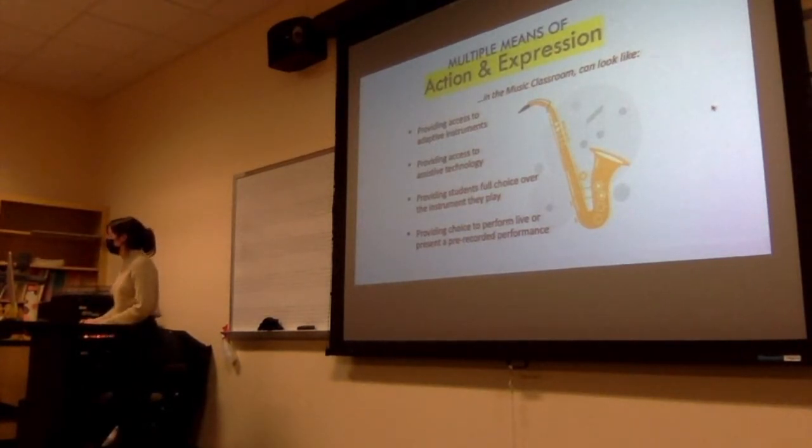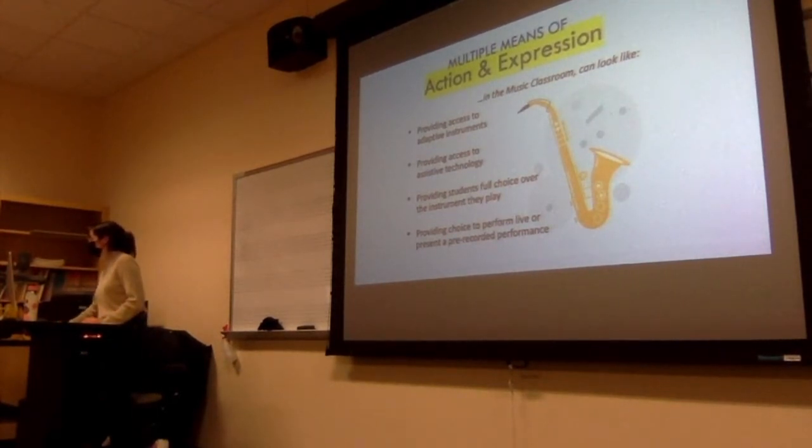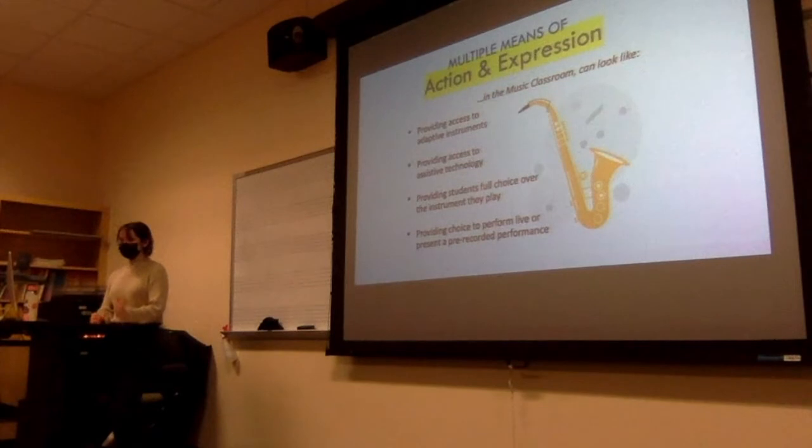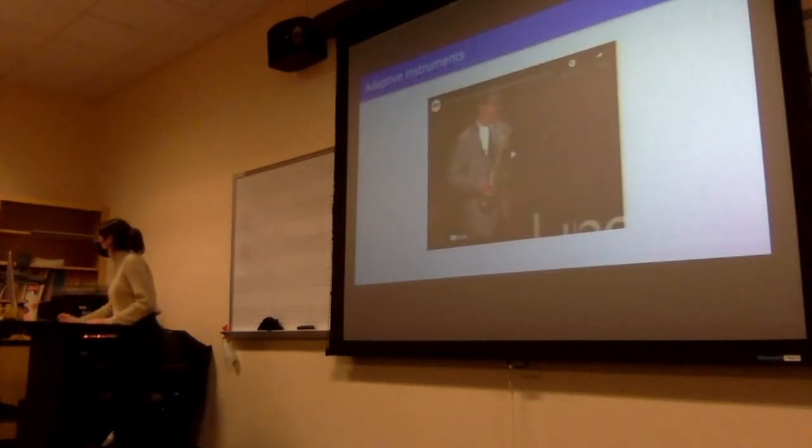The last principle of UDL is providing multiple means of action and expression. For one lesson, this could look like providing access to adaptive instruments and assistive technology, allowing students full choice over the instrument they play, and providing choice to perform live or pre-recorded performances based on their situation. Flexibility. We can connect that to the flexibility and use guidelines from universal design. Providing students full choice over the instrument they play can apply to, you know, if you have 20 trombones already you really don't want another student to pick trombone, but that's what they're drawn to. That's really what they want to do. Also, some students that are disabled are encouraged to play certain instruments over others. But I think if someone wants to play clarinet, they should play clarinet. There are one-handed clarinets.